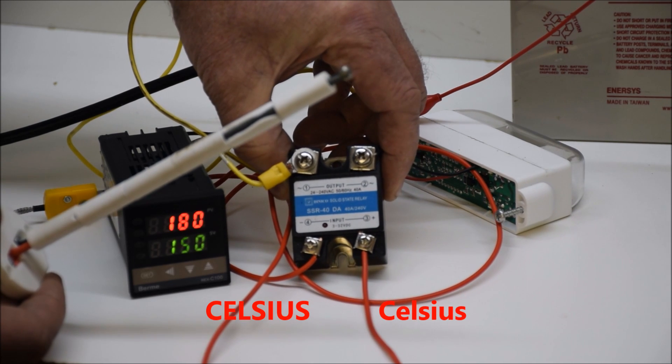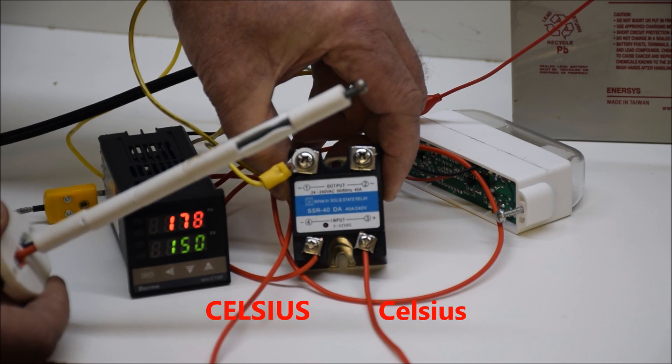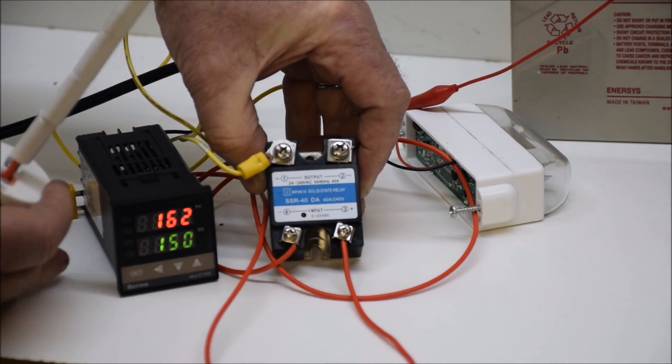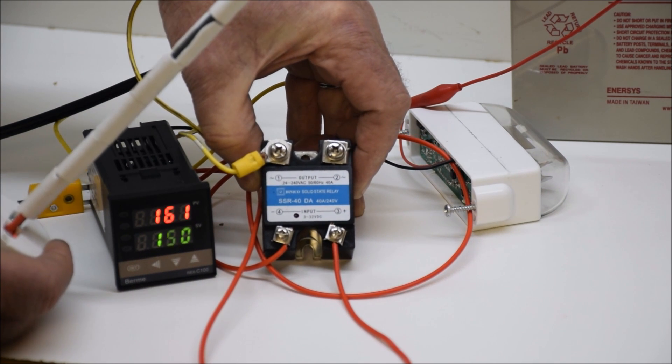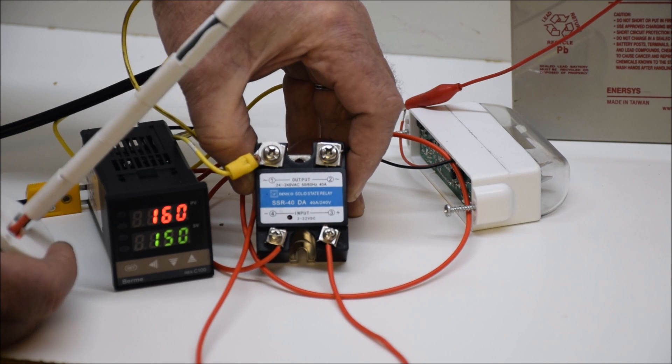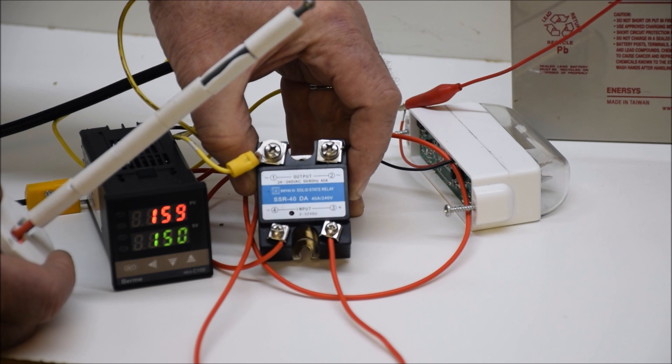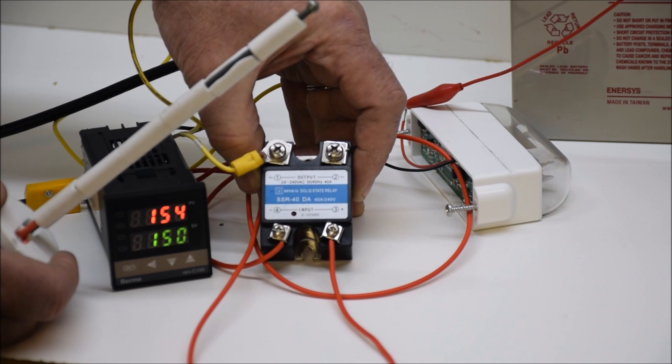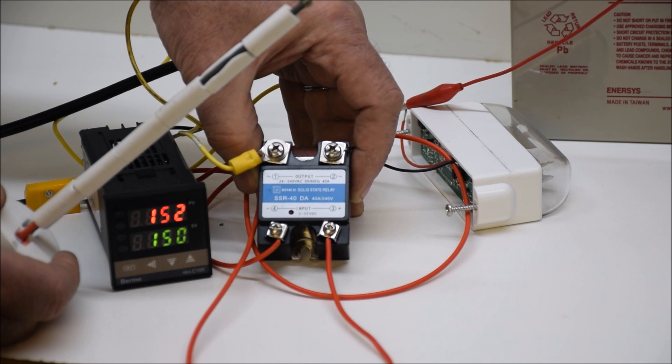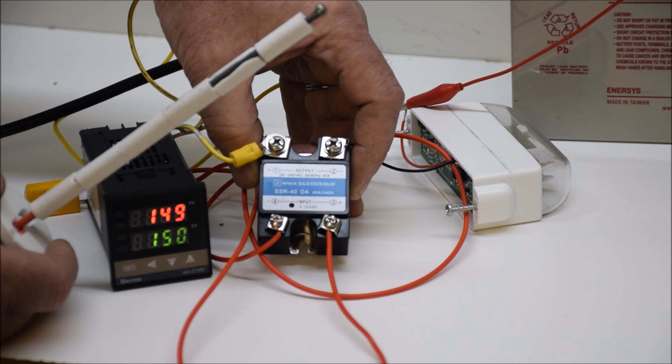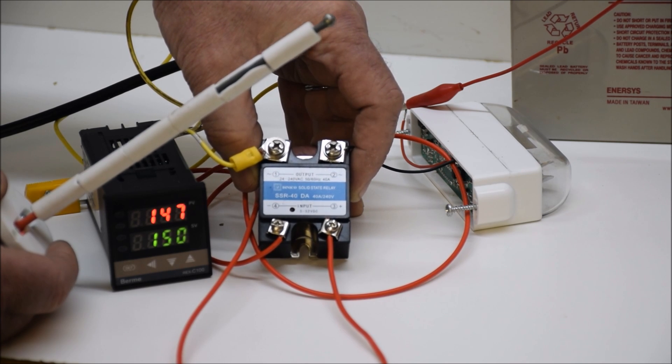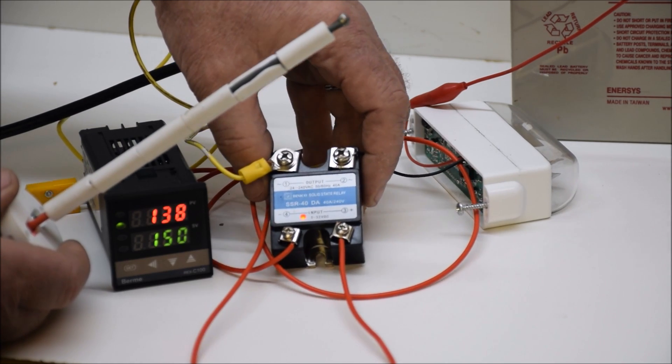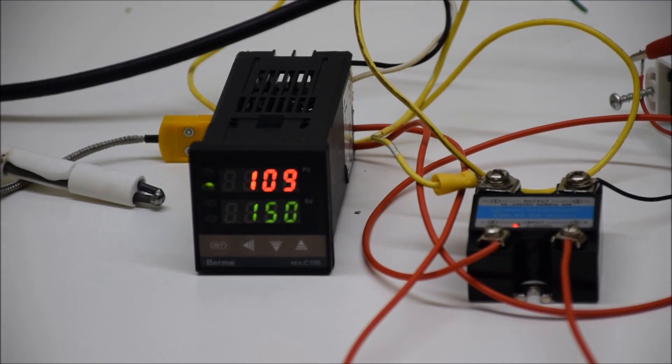Now you can see the temperature is starting to drop. Blow on it to cool it a little faster. Now remember, these readings are in centigrade. When it starts, it's getting closer. You can see over here that the red light is not on. The temperature is dropping slowly. When it gets closer to 150, it'll start cycling. There we go. Now it's sensing it. It's running power back to it.